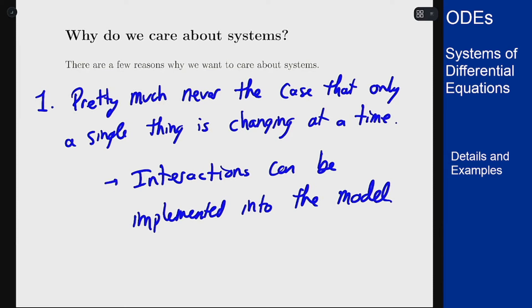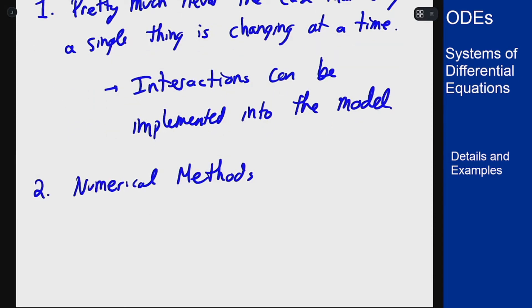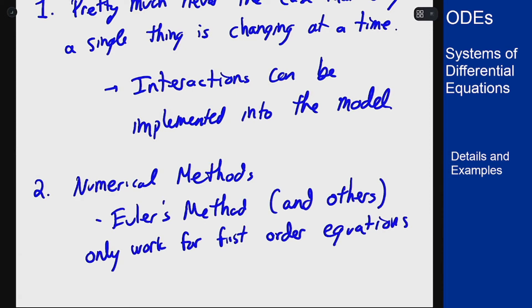The second reason for this is for numerical methods. And the point here is that Euler's method and any of our other numerical methods only work for first-order equations. There's no method for second-order, third-order, fourth-order Euler's method. It just doesn't work. But they will also work for first-order systems.